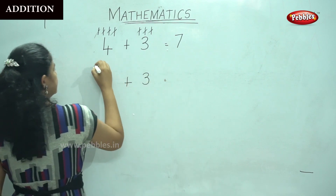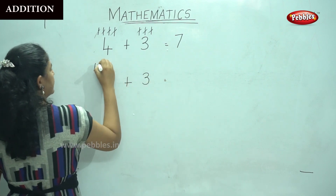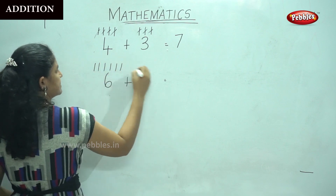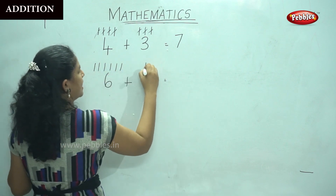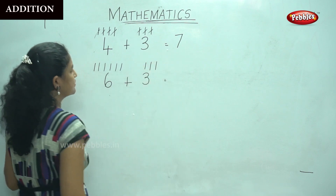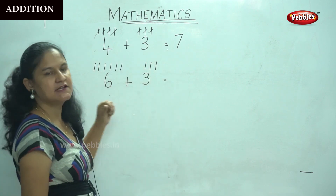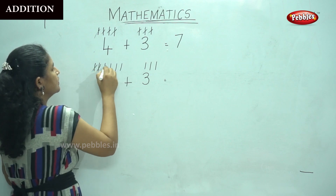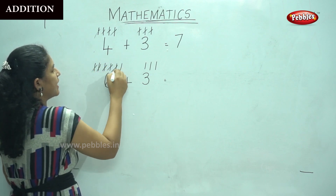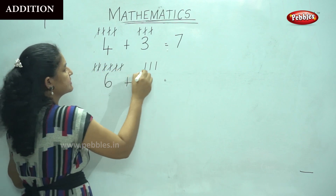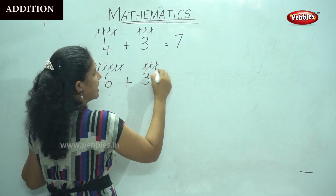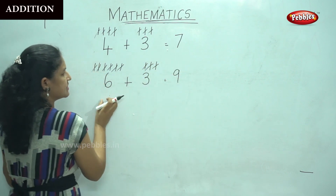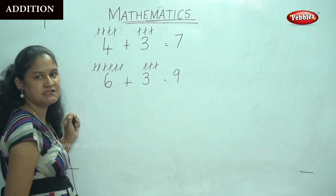Next is six plus three. I will write one, two, three, four, five, six strokes, then one, two, three more. Adding all these strokes: one, two, three, four, five, six, seven, eight, nine — it gives me the answer nine. So six plus three is nothing but nine.